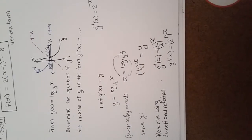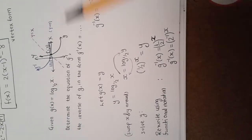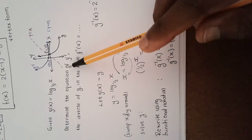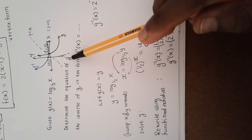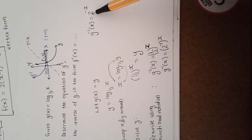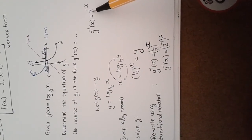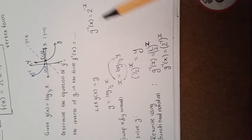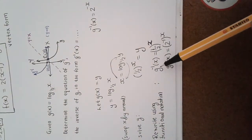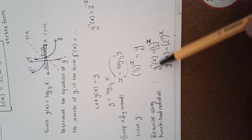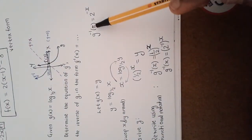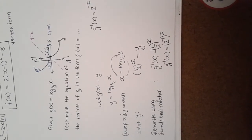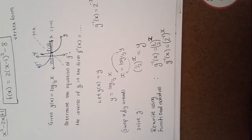So basically, the question just asks us to give the equation of the inverse function. That is the answer: you can write it as (1/2)^x or equivalently as 2^(−x). You can stop at either form.